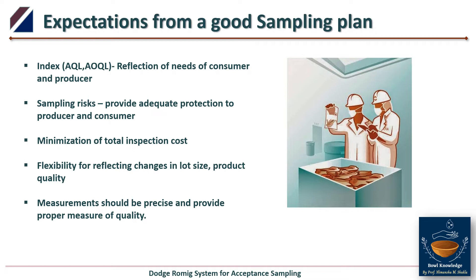What are the expectations from a good sampling plan? A sampling plan is decided mutually by the seller and consumer — that is, producer and consumer — and it is finalized before inspection. Deciding a sampling plan involves the lot size, sample size, and acceptance number. A good sampling plan is indexed by AQL and average outgoing quality level, which reflects the needs of both consumer and producer, and should provide adequate protection to both parties.